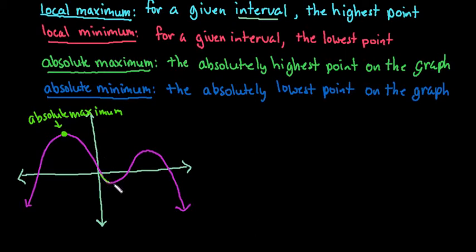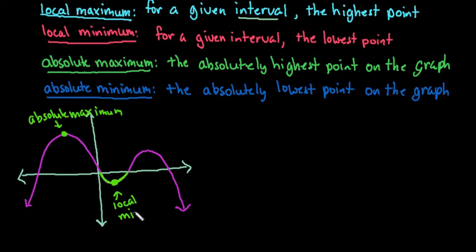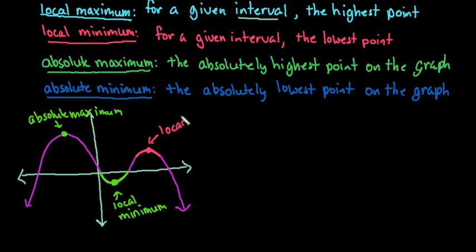Down here, we have a lowest point for this interval, so we have a turn that happened in here. This would be called a local minimum — it's not the lowest point on the graph, but for this interval right here, it is. Basically, you can think of the maximums and minimums as where there's a turn in the graph. And again, here we have another turn. This would be a maximum point because it's the highest point there, but it's not the absolutely highest point — I can see that there are points over here that are higher. So this one would be considered a local maximum.